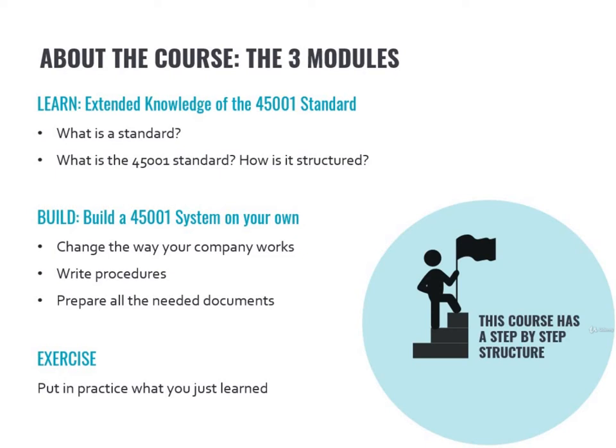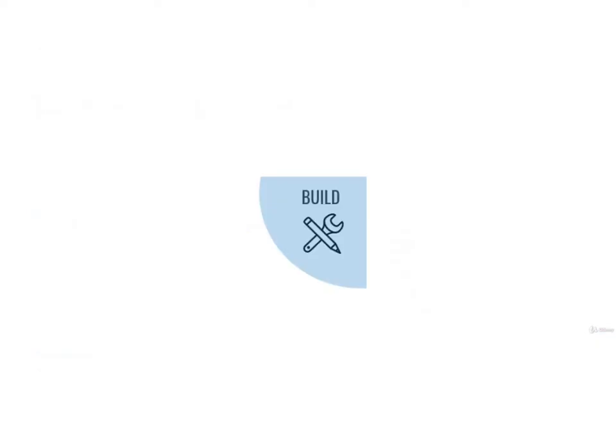Slow and steady wins the race. One brief note before going forward: every time we will be working in the Build parts, you will find in the upper right side of the screen a specific symbol made of a pencil and a wrench. This clear division between Learn, Build, and Exercise will help you navigate through the course. We recommend not to skip any of it.